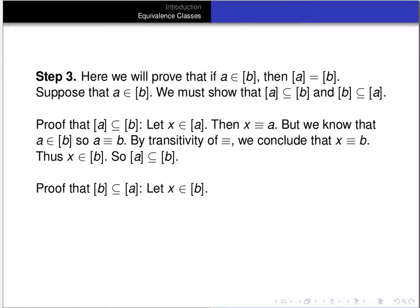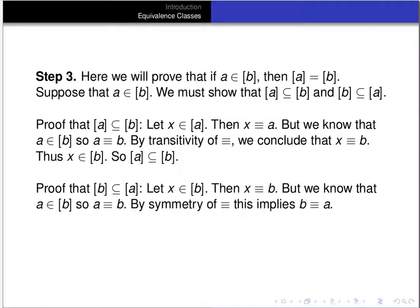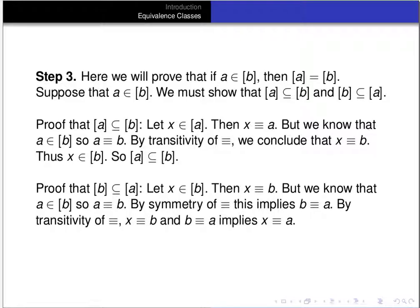Now let's prove the equivalence class of B is a subset of the equivalence class of A. Suppose X is in the equivalence class of B, so X is related to B. We know A is also related to B. By symmetry, A related to B means B is related to A. By transitivity, X related to B and B related to A means X is related to A. So X is in the equivalence class of A, proving the equivalence class of B is a subset of the equivalence class of A.